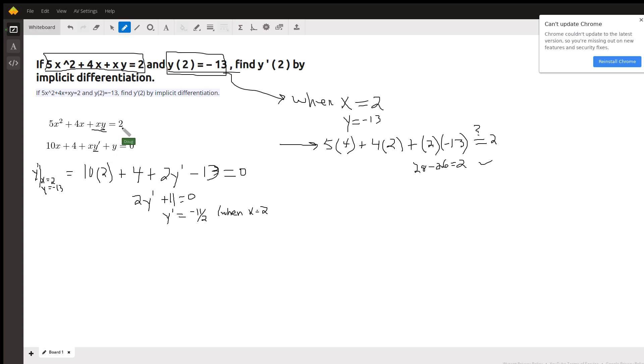And the derivative of 2 is 0. Now we could go to the trouble of solving this for y prime by going y prime equals, take all these other terms to the other side of the equal sign: minus 10x minus 4 minus y, and then divide by x.